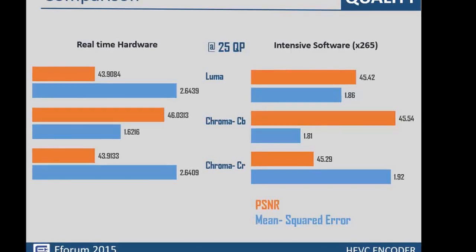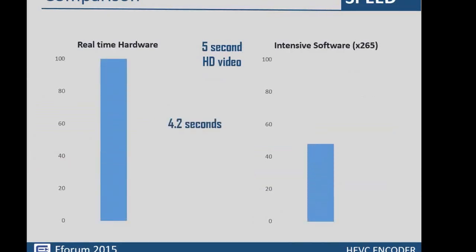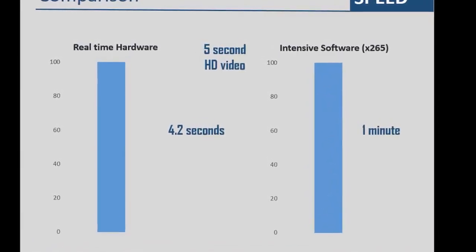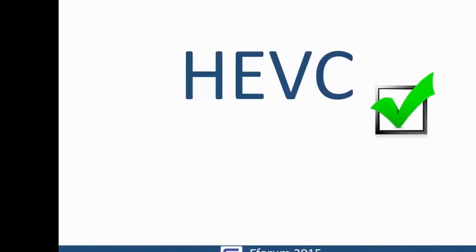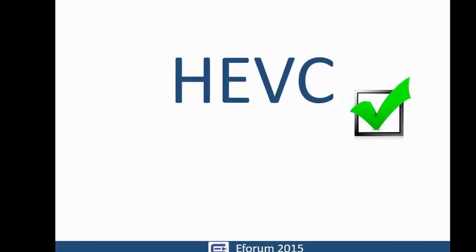The PSNR and mean square error values for the two encoders are very close to each other, with our encoder falling slightly behind. However, while x265 requires more than one minute to encode a five-second video, our encoder needs only 4.2 seconds. Hence, we managed to achieve next-generation video coding in real time. Thank you.